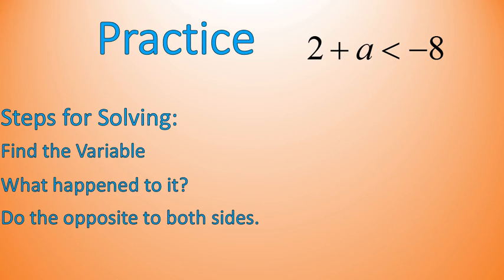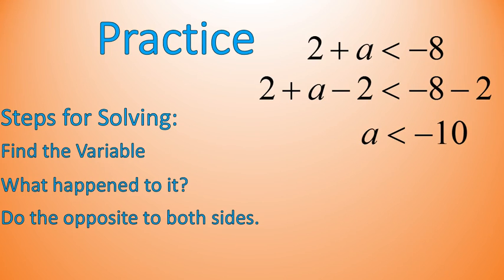Hey, welcome back. Here's the answer key for what you did. I find my variable. My variable is a. I look at what's connected to a. I have a positive 2. So I'm going to subtract 2 from both sides of this inequality. Notice that I've just subtracted 2 from both sides. 2 minus 2 is 0. The left side leaves me with just a. And on the right side, I've got negative 8 minus 2, which gives me negative 10.